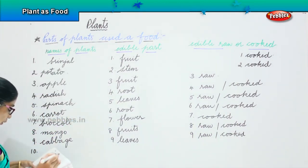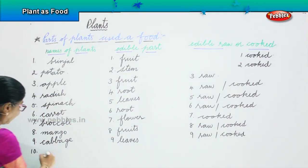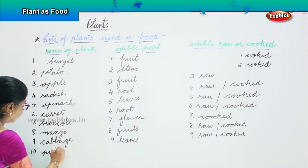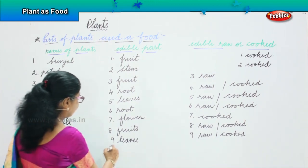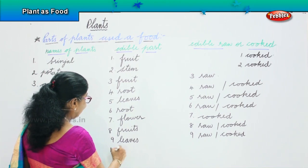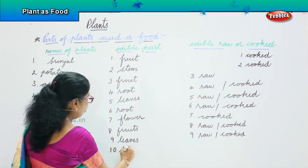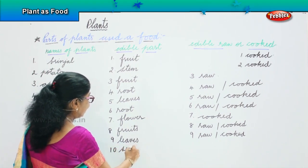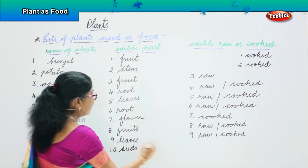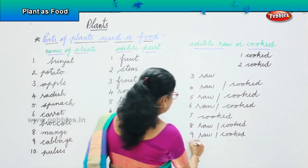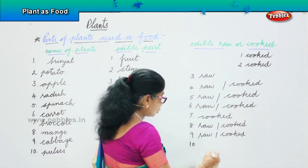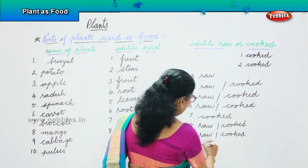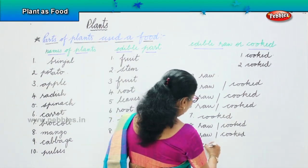And finally, let's look at pulses. What are pulses? They are seeds. How do you eat these seeds? These seeds have to be cooked, not eaten raw.